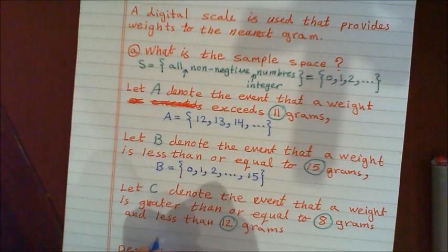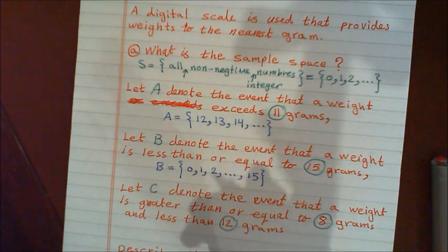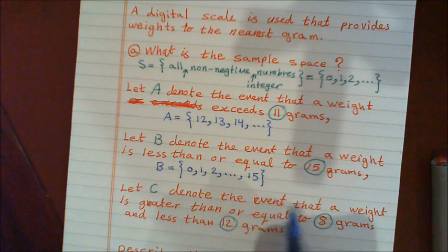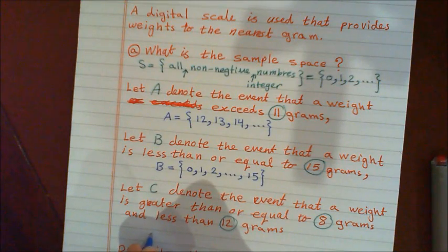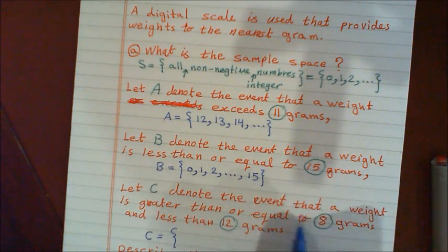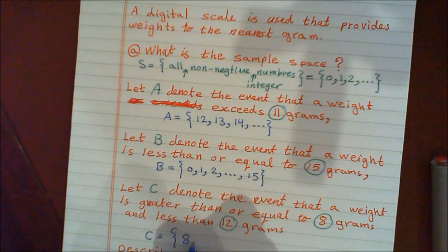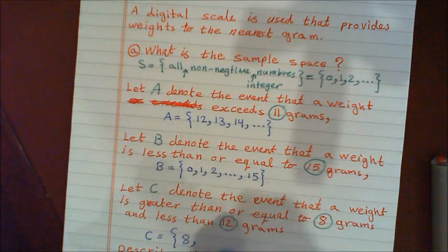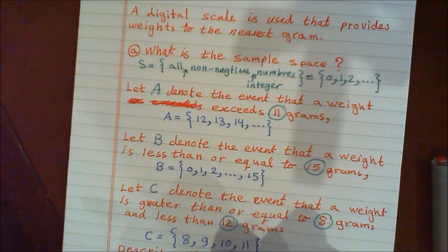Event C has two parts. Let C denote the event that a weight is greater than or equal to 8 — so since it says 'equal,' 8 is included — and less than 12. It does not say 'less than or equal to,' it says 'less than 12,' so 12 is not included. We go from 8 until 11, so C = {8, 9, 10, 11}.